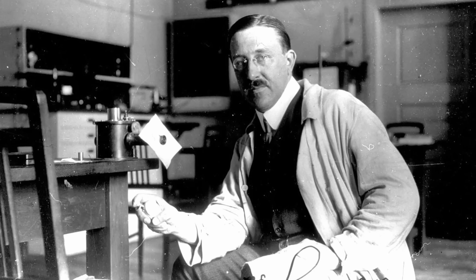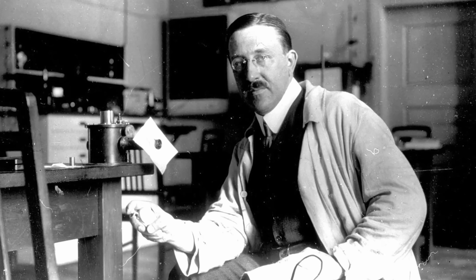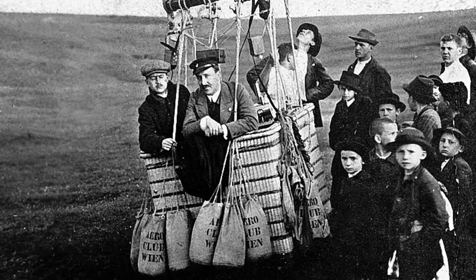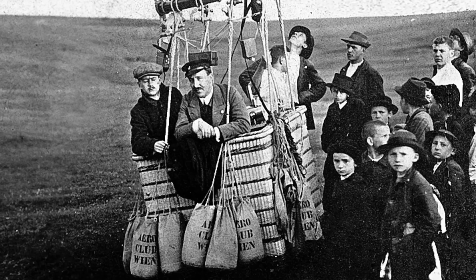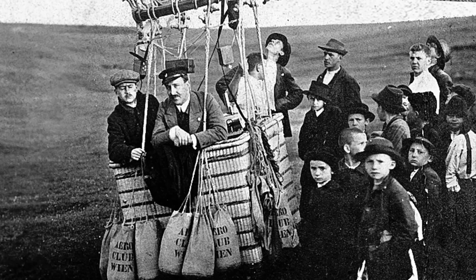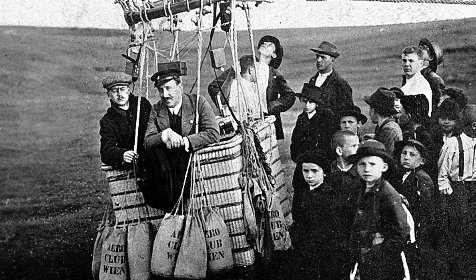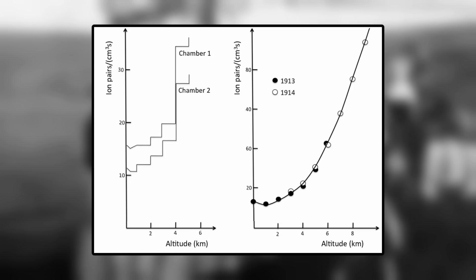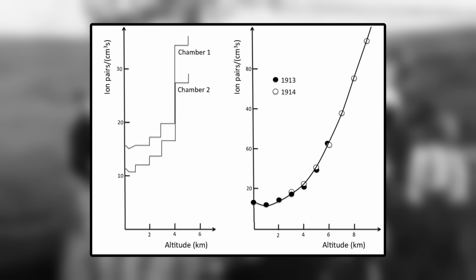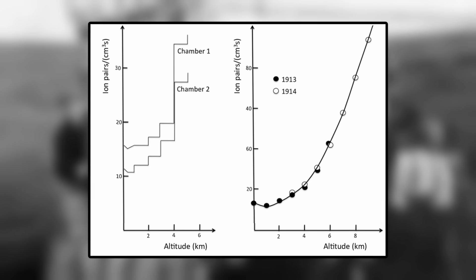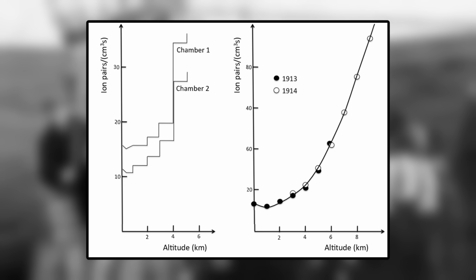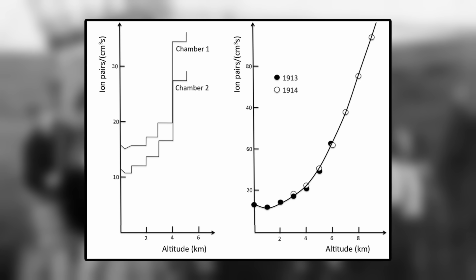Hess discovered that there was a second form of ionizing radiation in Earth's atmosphere. He made a series of flights in his personal hot air balloon and found that, after dipping slightly, levels of ionizing radiation in the atmosphere increased significantly as elevation increased, and therefore this ionization must originate in outer space.